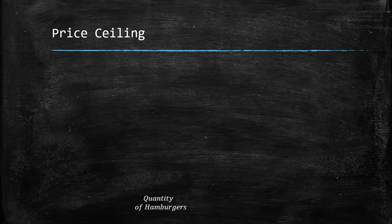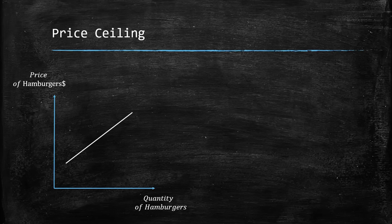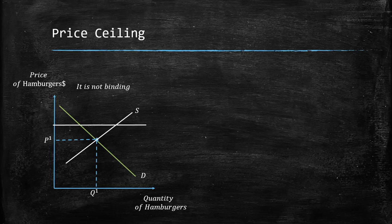First of all we need to talk about the price ceiling — the maximum price. Imagine we are in the market for hamburgers. We have the supply curve and the demand curve, and there is an equilibrium for prices and quantities. One case is when the price ceiling is not binding, meaning the policy fixes a maximum price that is higher than the equilibrium, so it doesn't have any effect on the original equilibrium.